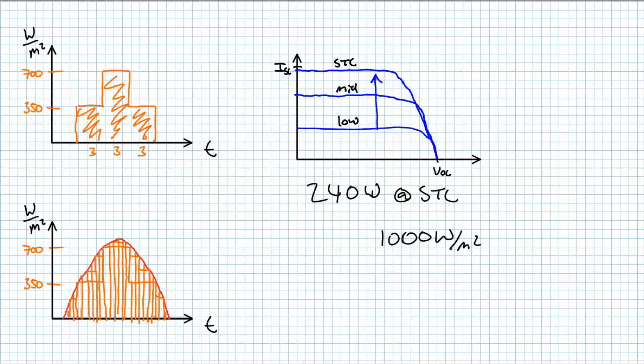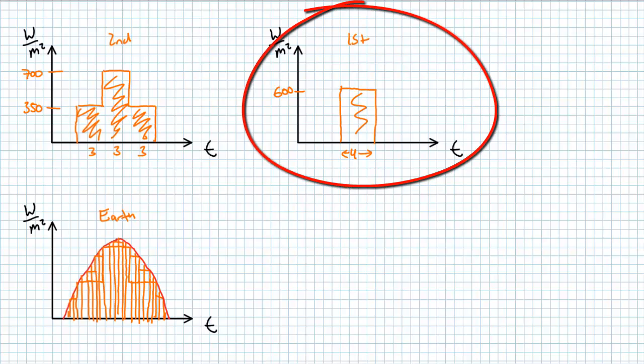All this means is that the STC power rating can be used to approximate PV panel output given variant intensity conditions. Let's return to our first planet and visit an off-grid alien with a 1 kilowatt PV array. How much energy will this system produce?